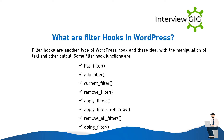What are filter hooks in WordPress? Filter hooks are another type of WordPress hook and deal with the manipulation of text and other output. Some filter hook functions are: has_filter, add_filter, current_filter, remove_filter, apply_filters, apply_filters_ref_array, remove_all_filters, and doing_filter.